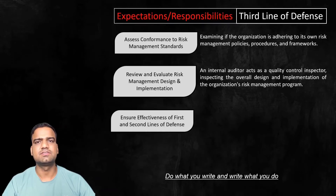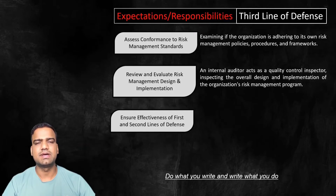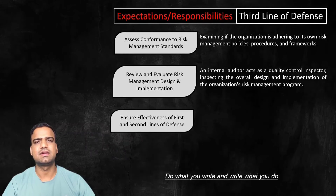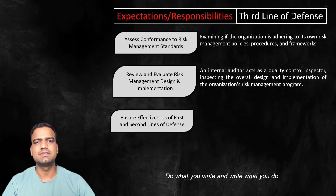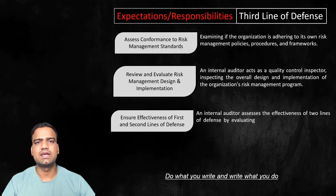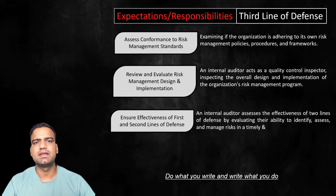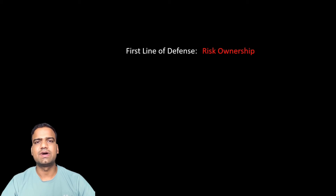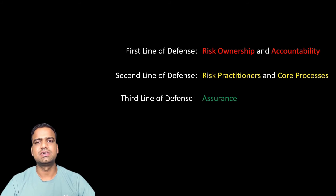The third line of defense ensures the effectiveness of the first and second lines of defense. The first line of defense consists of operational managers responsible for managing risks in their day-to-day activities. The second line includes risk management professionals who develop and oversee risk management strategies and procedures. An internal auditor assesses the effectiveness of these two lines by evaluating their ability to identify, assess, and manage risks in a timely and appropriate manner. In short: the first line provides risk ownership and accountability; the second line provides risk management, including risk practitioners and core processes; and the third line provides assurance and oversight.